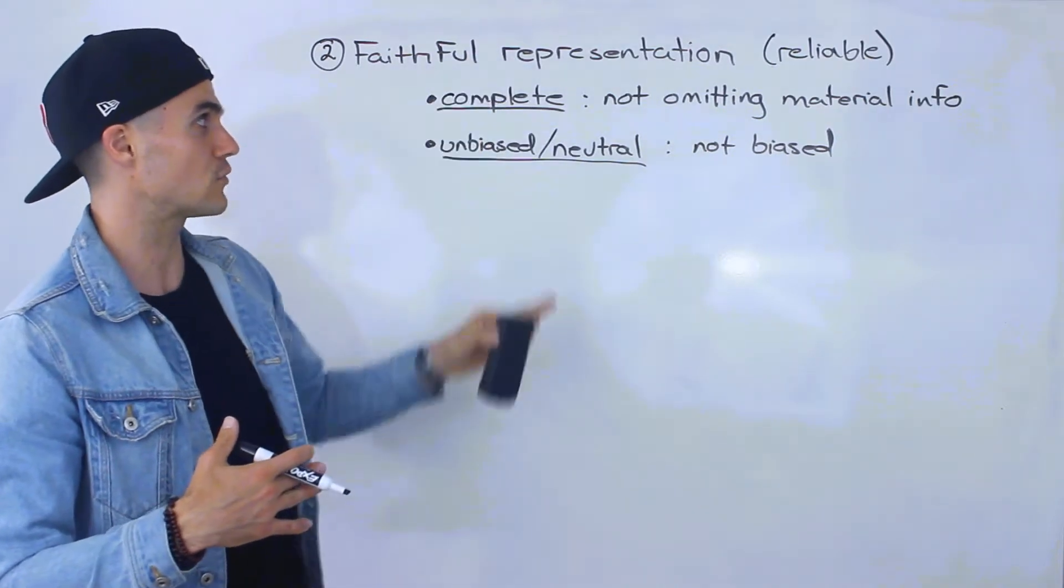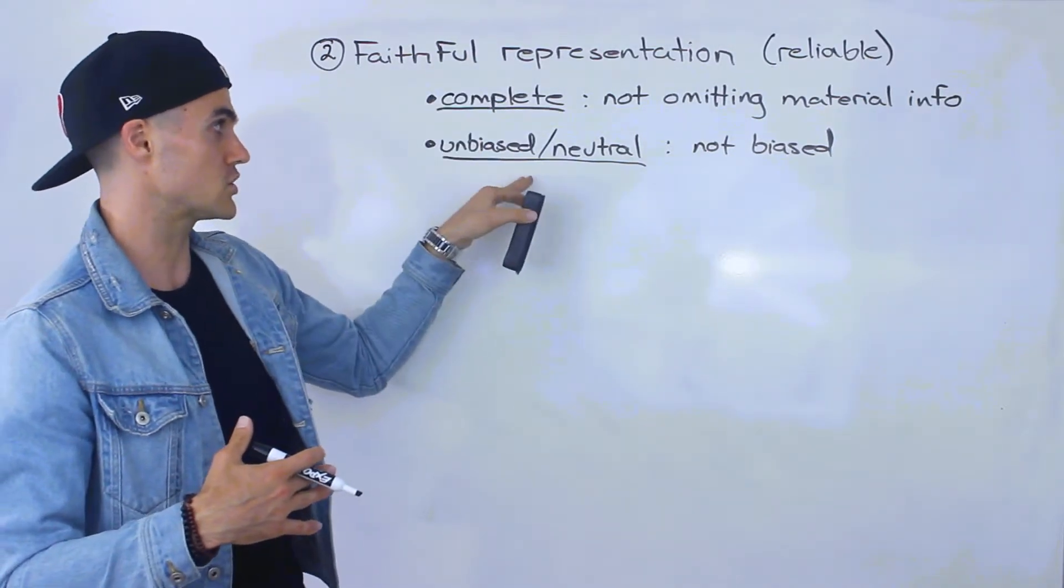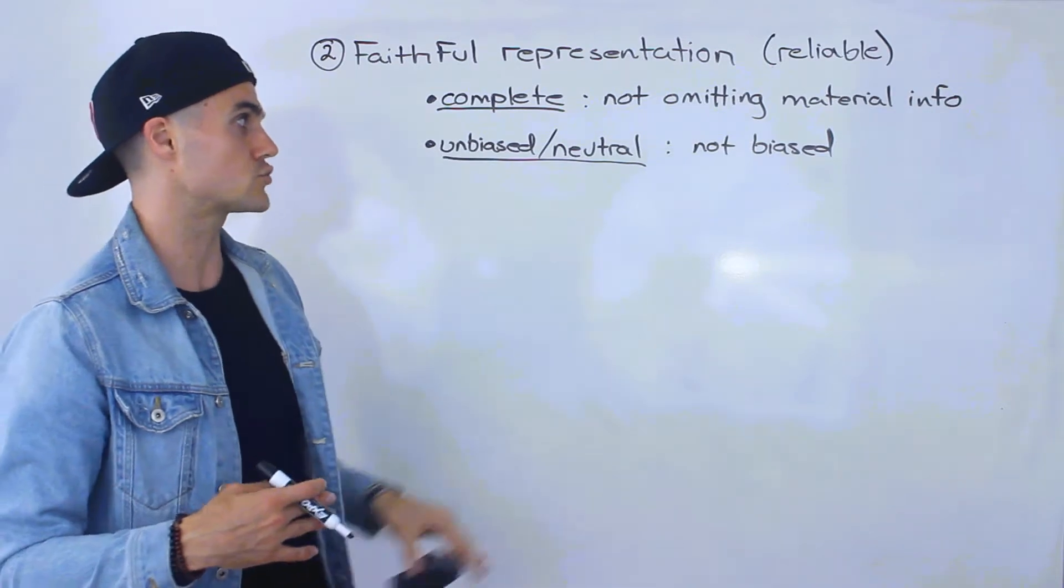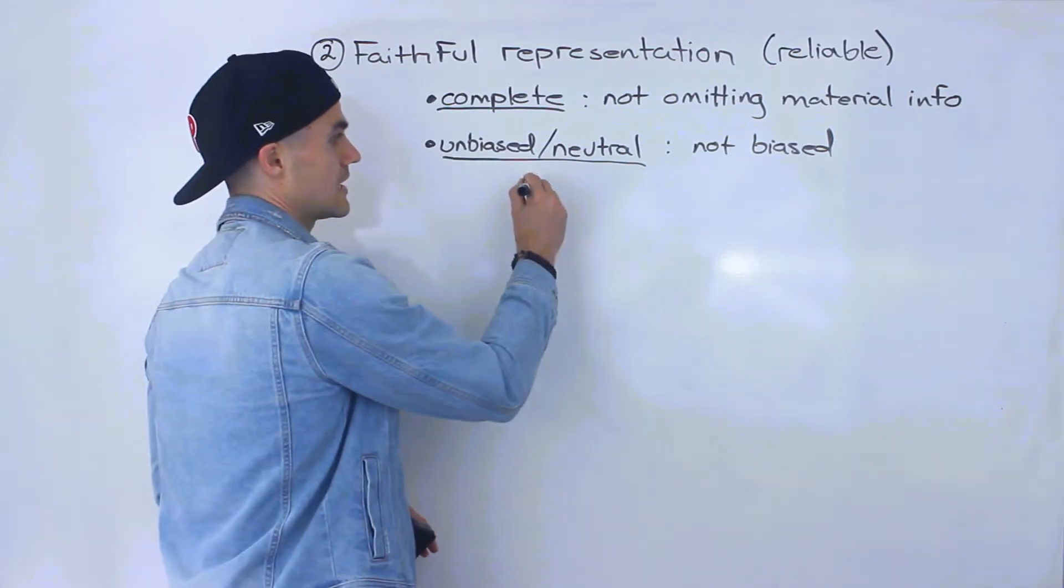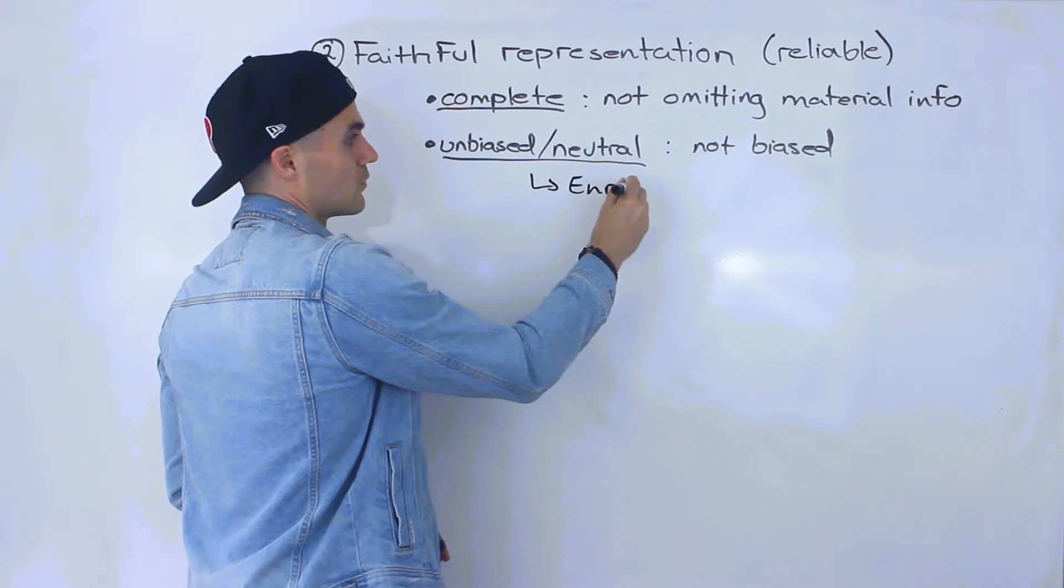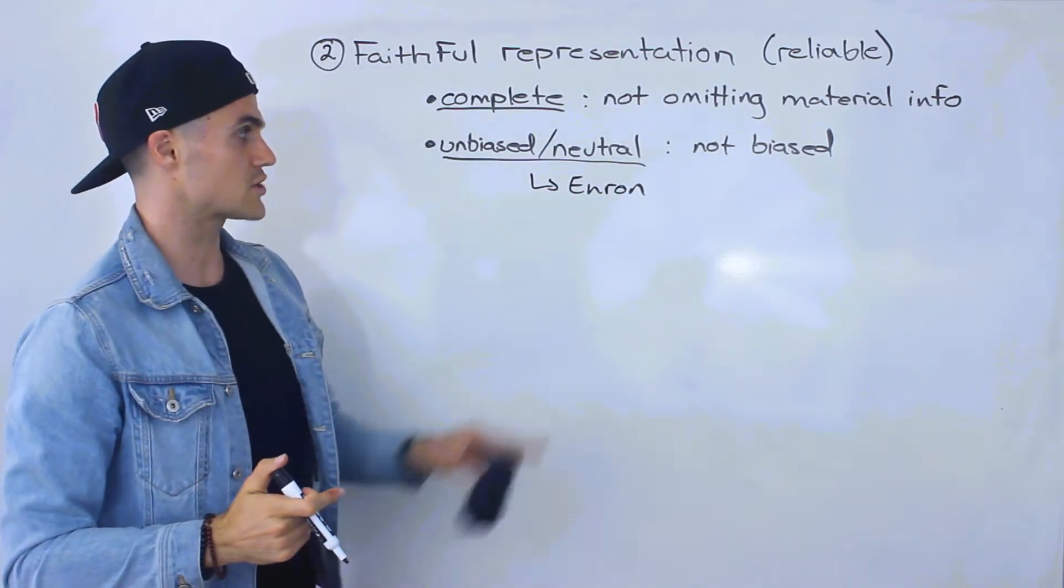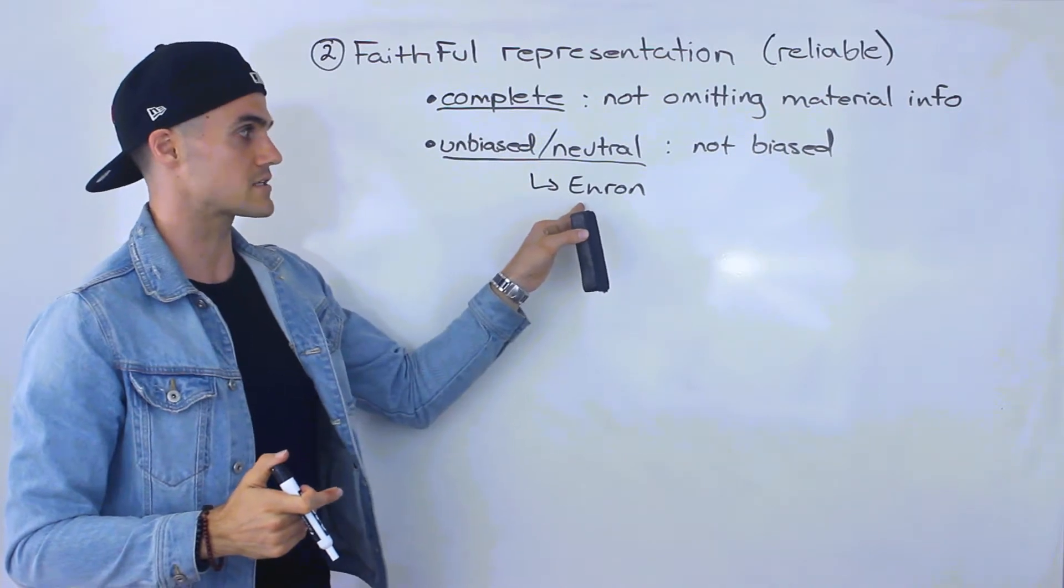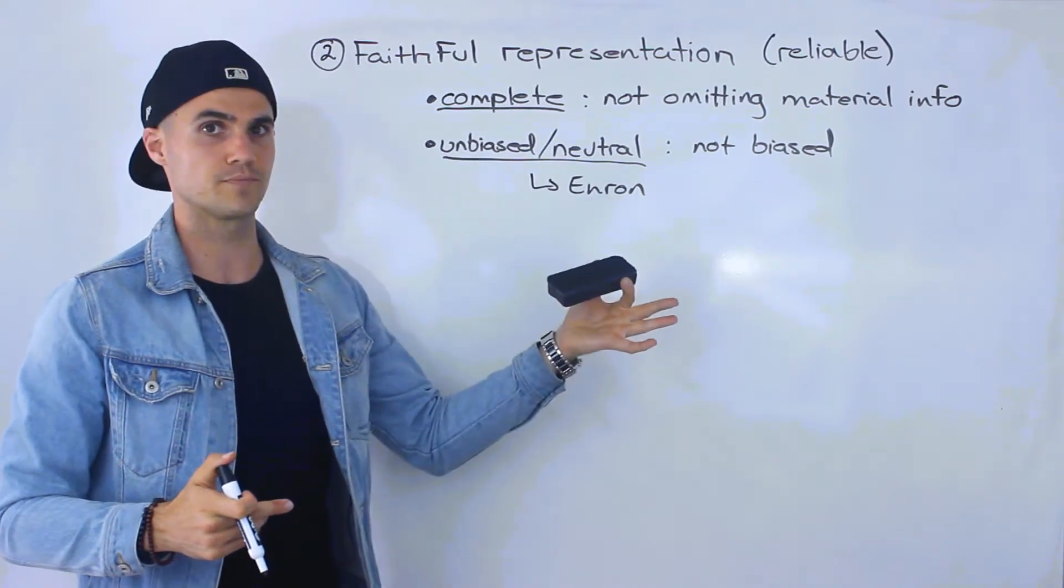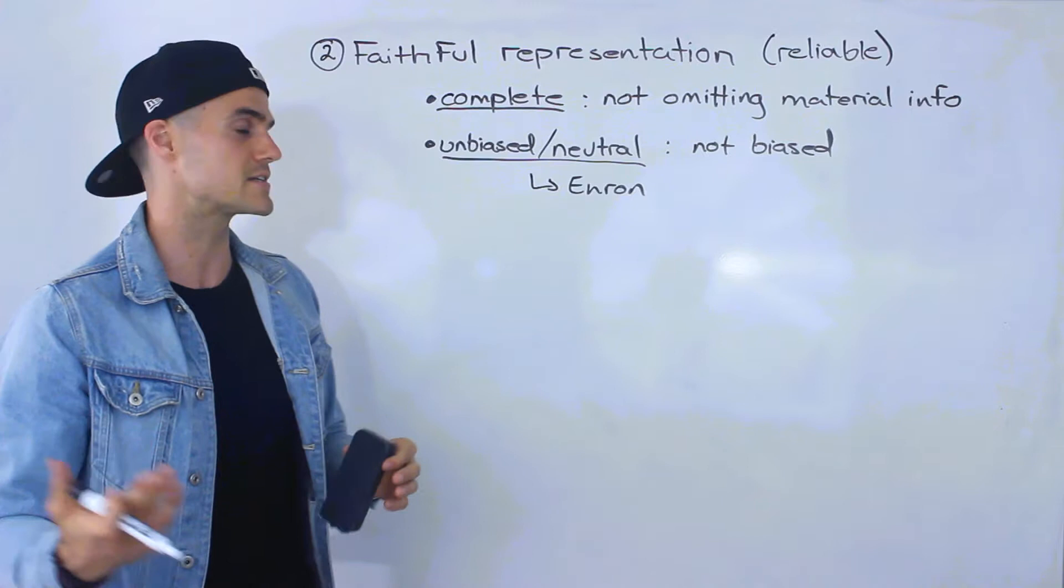that would be biasing the accounting information. So that would violate that faithful representation. The information wouldn't be unbiased. It wouldn't be neutral. A good example of this is Enron, which was one of the bigger financial scandals in history. There's actually a really good documentary on this. It's called Smartest Guys in the Room. I highly recommend you watch it. It's an amazing documentary.